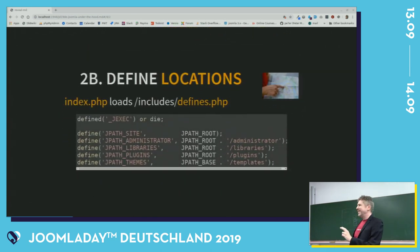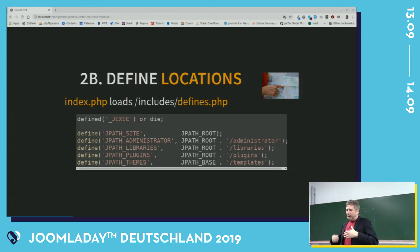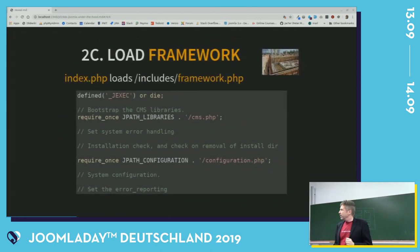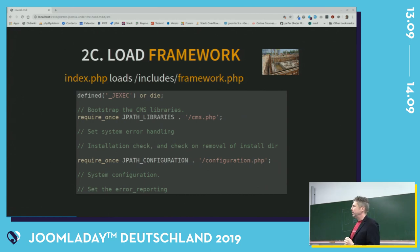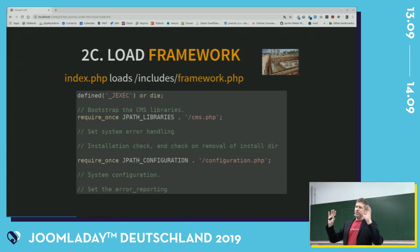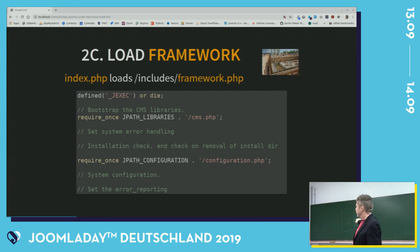The second thing that happens during the runtime: Joomla will define the locations of all the important folders because it loads defines. Then the third thing: Joomla will load framework.php. That will require some libraries and also configuration.php. If you still have the slash installation folder, Joomla will say it can't continue. If you don't have configuration.php, it will try to start the installation. It also sets the error reporting.